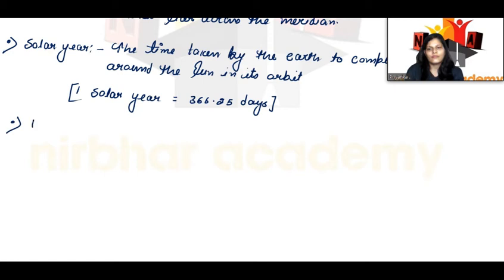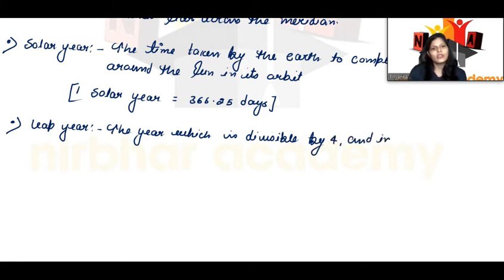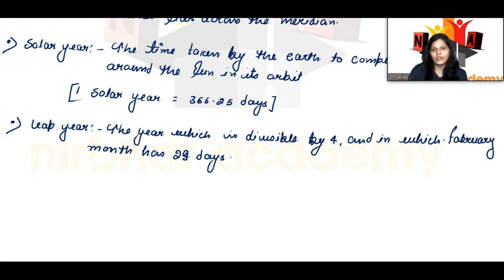Next, let's talk about leap year. A leap year is a year which is divisible by 4, and in which the month of February has 29 days. Such a year is called a leap year.